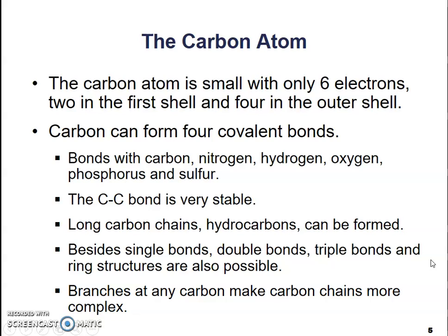The carbon atom is small with only six electrons — two in the first shell and four in the outermost shell. Carbon can form four covalent bonds because it only has four electrons in its outer shell. It wants to share electrons with other atoms to get to eight — that octet rule we talked about last chapter. It will bond with other carbon atoms, with nitrogen, hydrogen, oxygen, phosphorus, or sulfur.